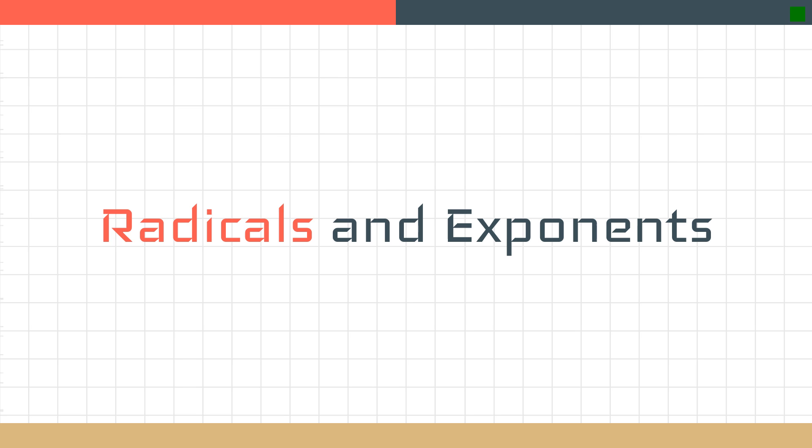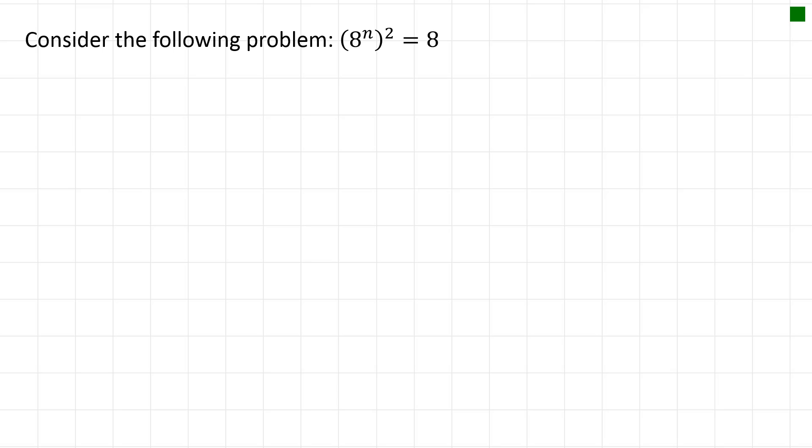Consider the problem: (8^n)² = 8. What is n such that 8 to the power of n squared equals 8? Using the power of a power rule, that means 8 to the power of 2 times n equals 8. And if there's no value there, that means it's 8 to the power of 1.